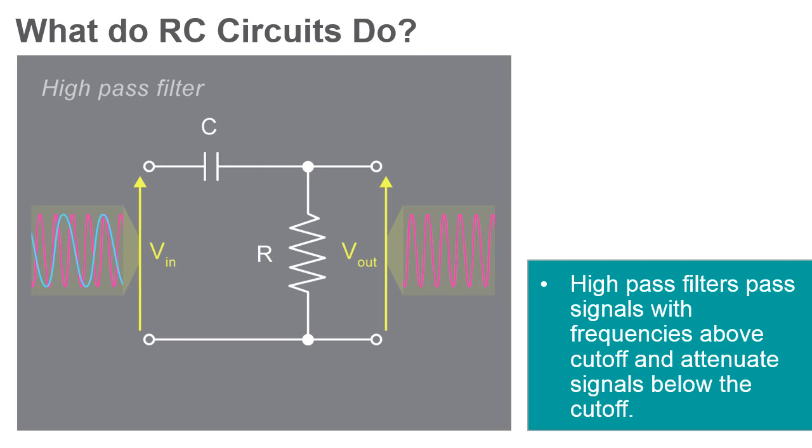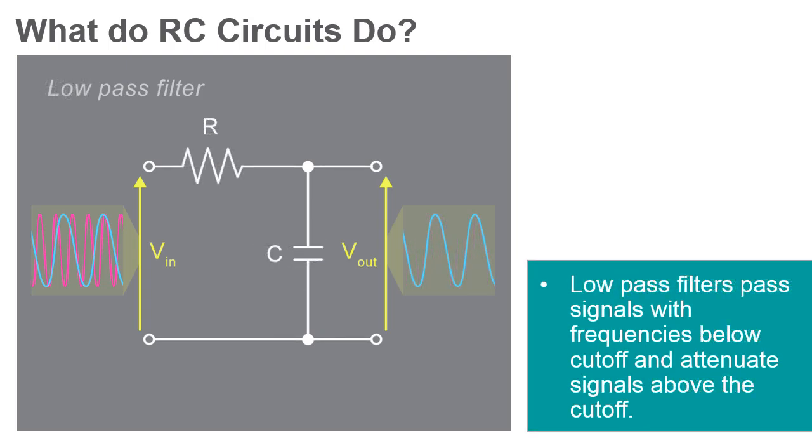A high-pass filter is a circuit that will pass signals with a frequency above a certain cutoff frequency and attenuate signals with a frequency below that cutoff. A low-pass filter will pass signals with a lower frequency than the cutoff and attenuate signals with a higher frequency than the cutoff.